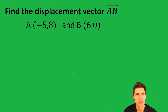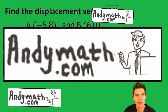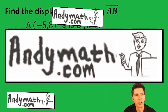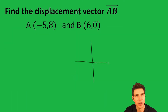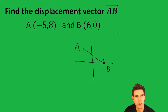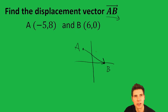Hey guys, welcome to this vector video. We're going to find the displacement vector AB. So what this means — if you plot the points negative 5, 8 and 6, 0 — you're going to have this vector right here from A to B. It's going from A to B. That's what this is signifying right here.